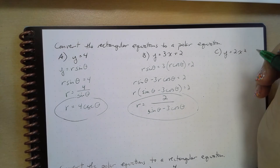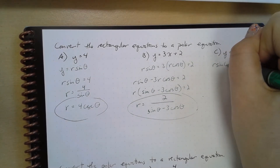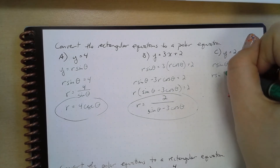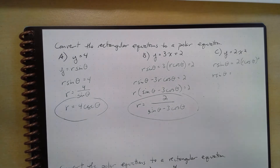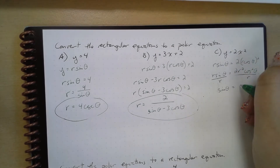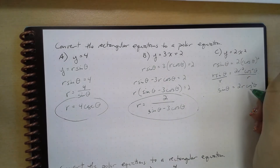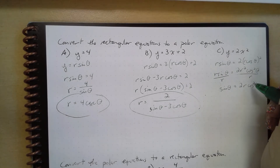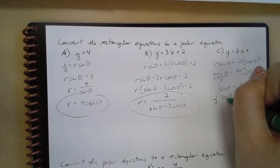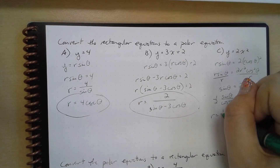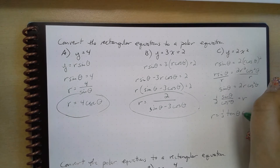Now for y = 2x². We rewrite this as r sin(θ) = 2(r cos θ)², which is r sin(θ) = 2r² cos²(θ). Dividing both sides by r gives sin(θ) = 2r cos²(θ). Solving for r: r = sin(θ) / (2 cos²(θ)), which we can rewrite as r = (1/2) tan(θ) sec(θ).